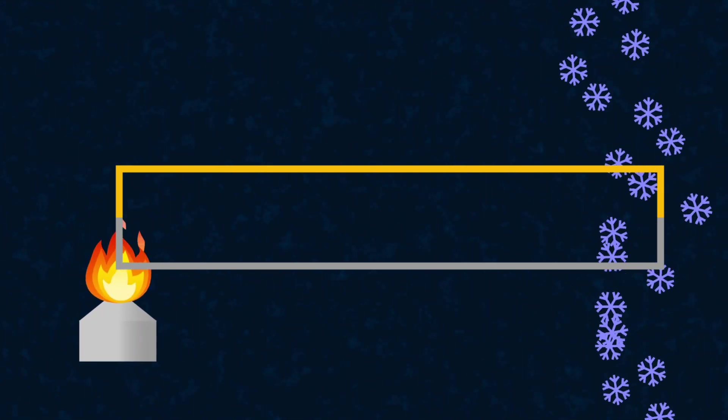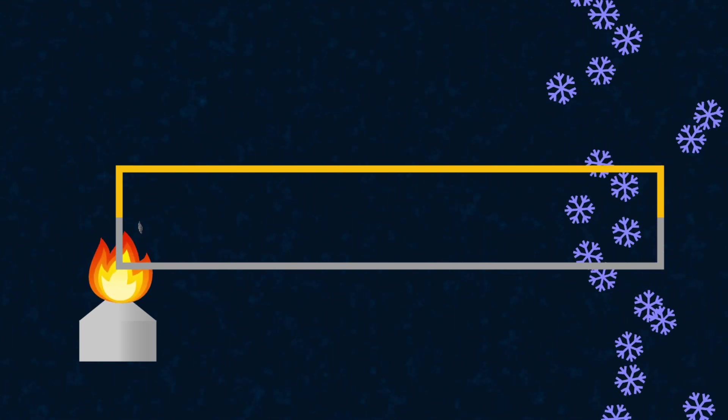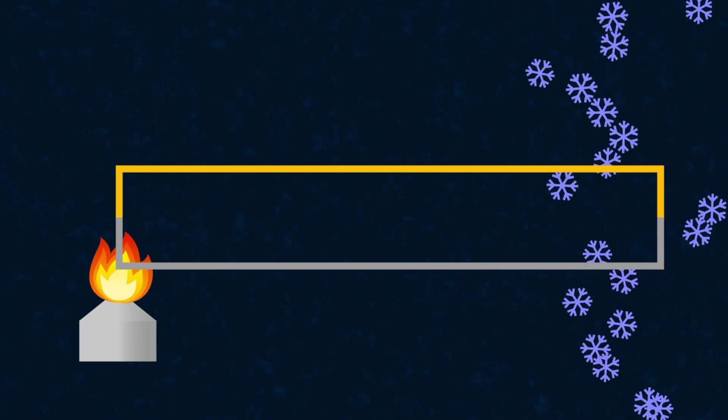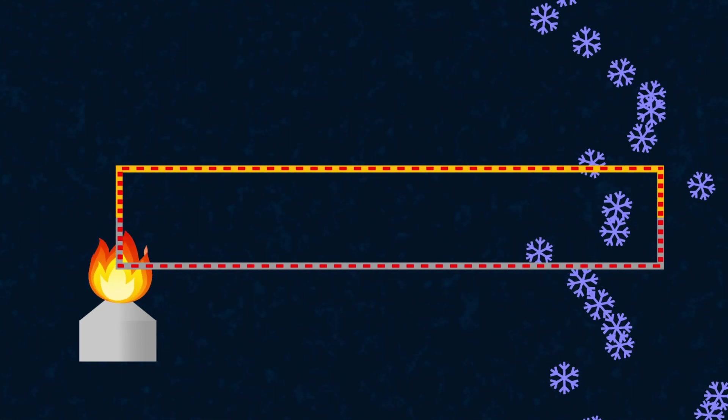If a temperature difference is applied between the ends of the thermocouple by heating one end and cooling the other, or both simultaneously, an electric current will begin to flow through the thermocouple.